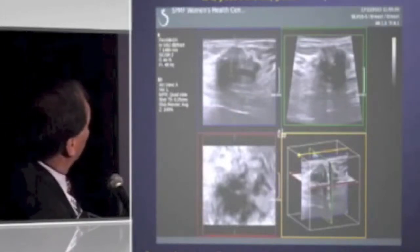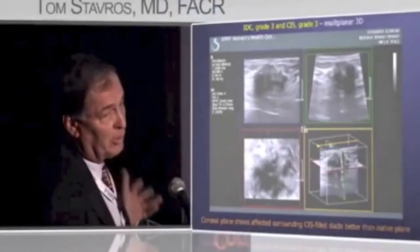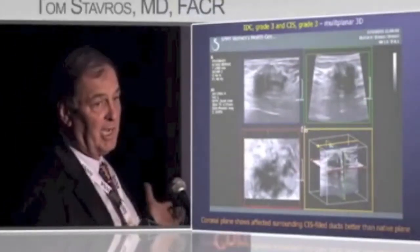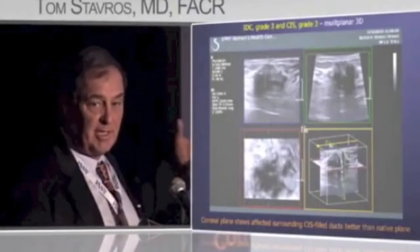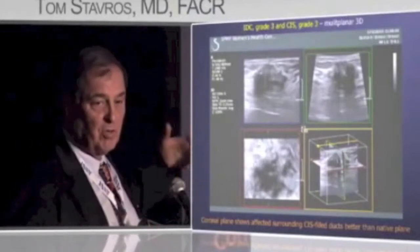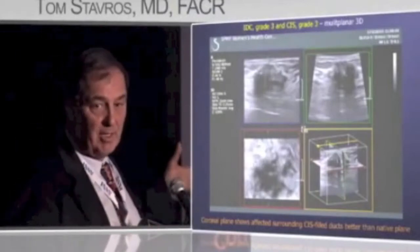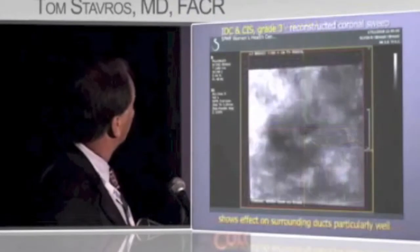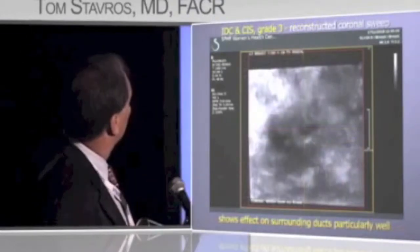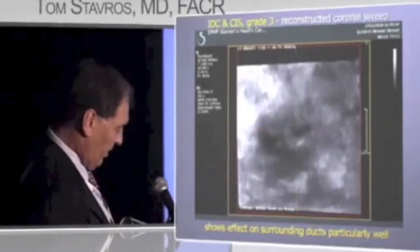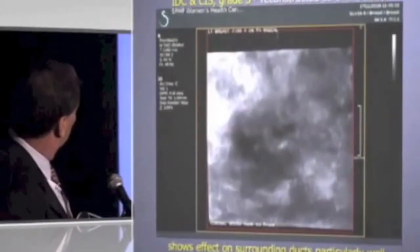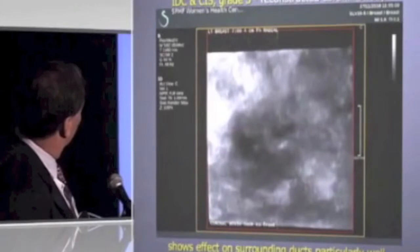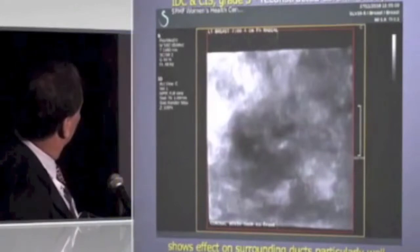The coronal image is also very good for DCIS components because as they extend into the surrounding tissue from the mass, they're best seen on the coronal planes, and we're seeing that here.